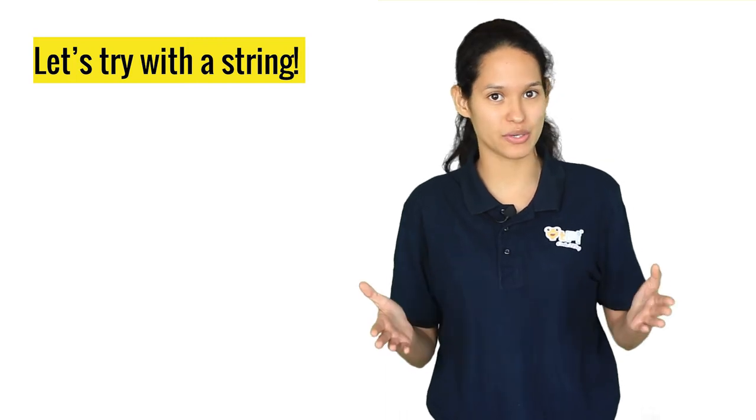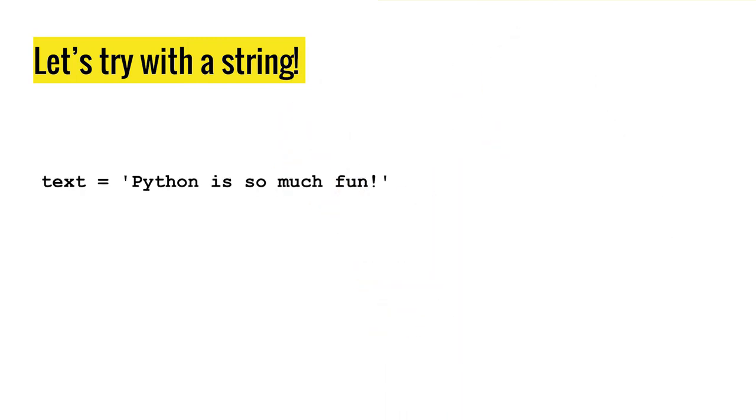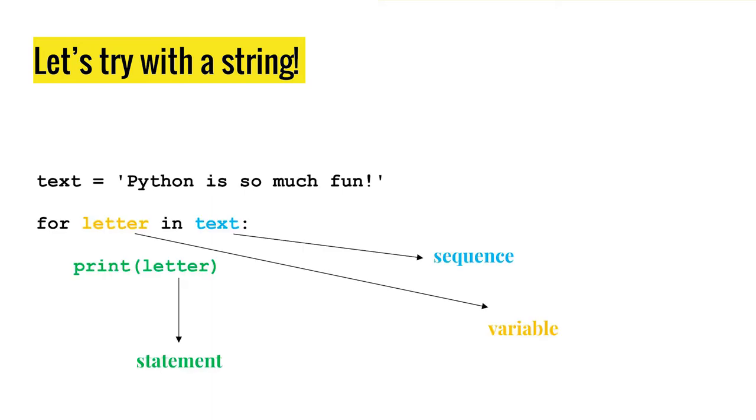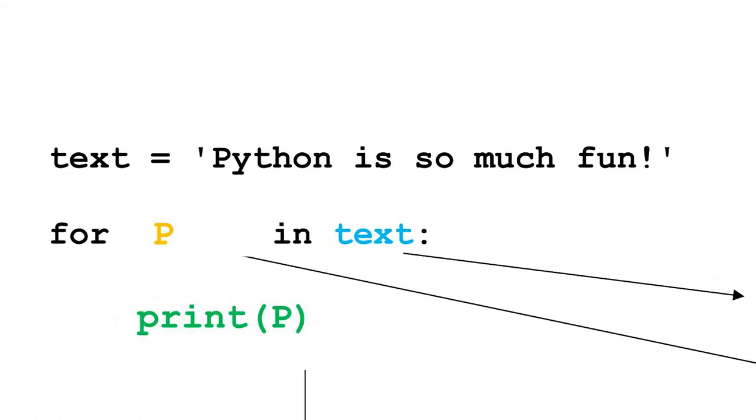Now let's take a look at how we can use the for loop with strings. In this example, we have a string 'Python is so much fun'. We have a for loop where for letter in text: print(letter). Over here, letter is replaced by each character from the string.